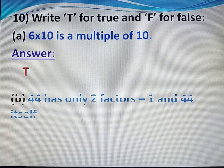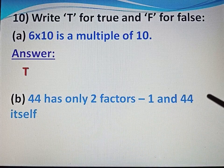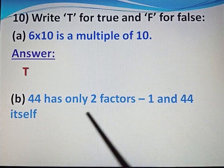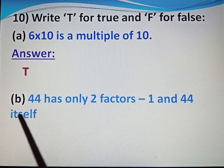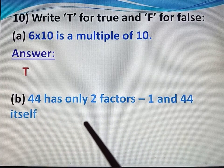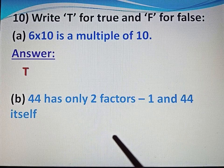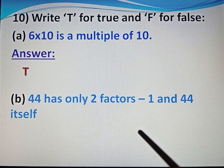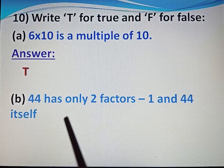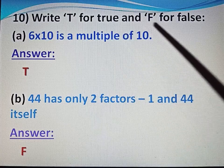Now come to part B. 44 has only two factors: 1 and 44 itself. No, 44 has not only two factors. The factors of 44 are 1, 2, 4, 11, 22 and 44. So this statement is false. Write F.